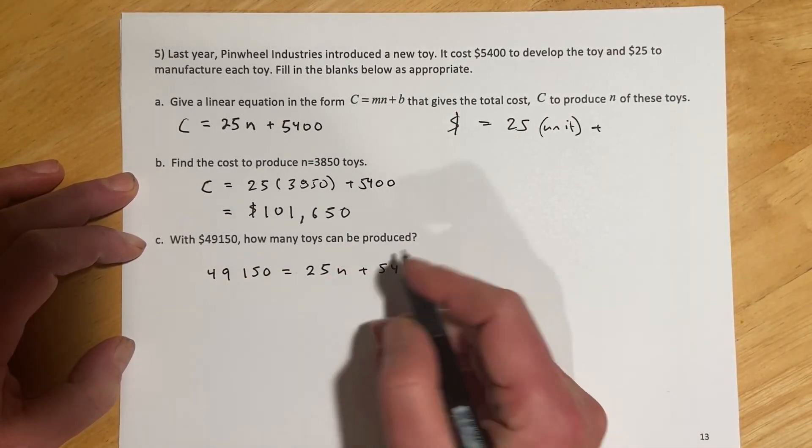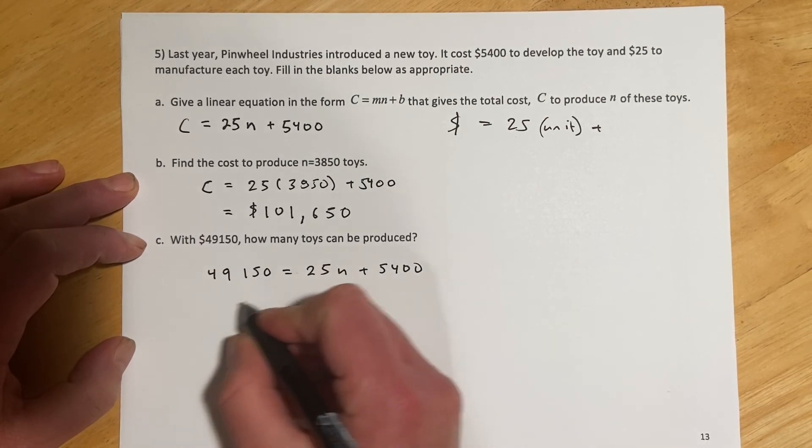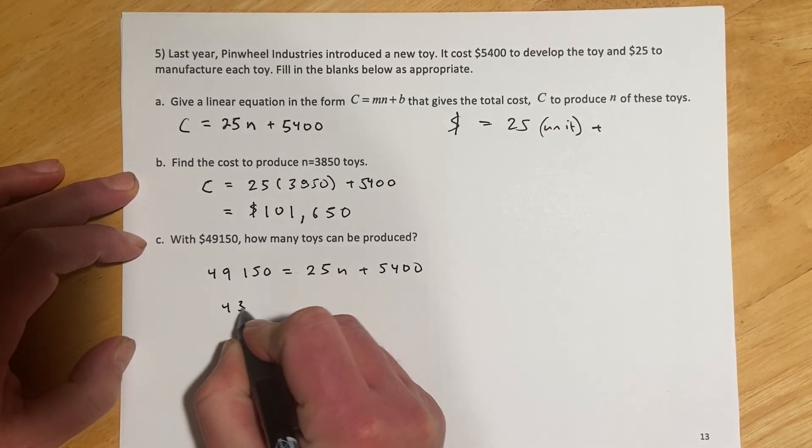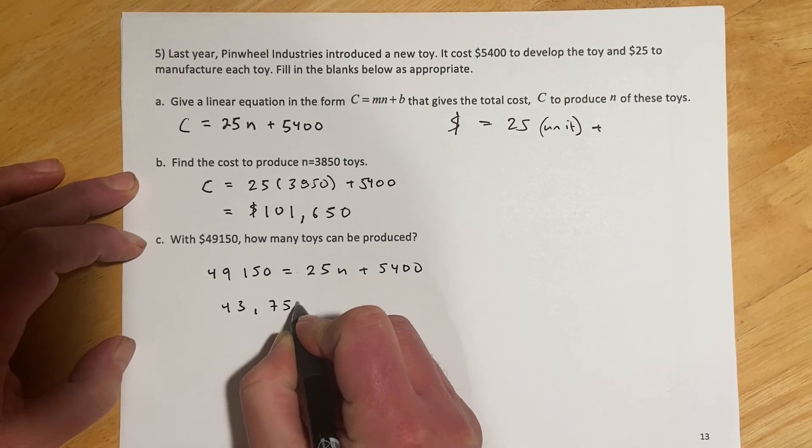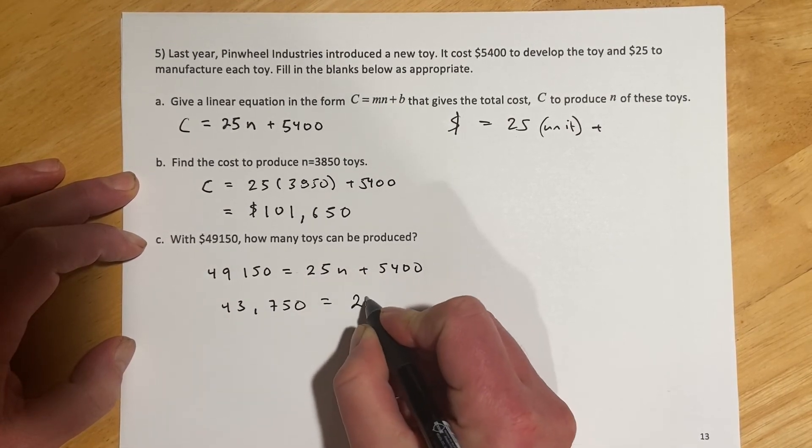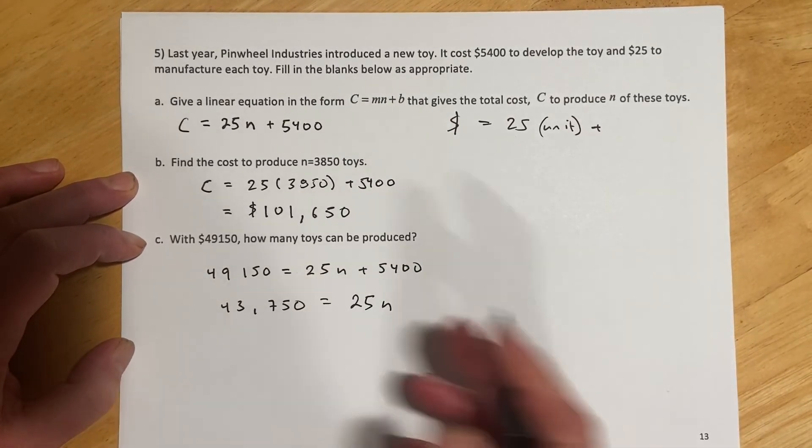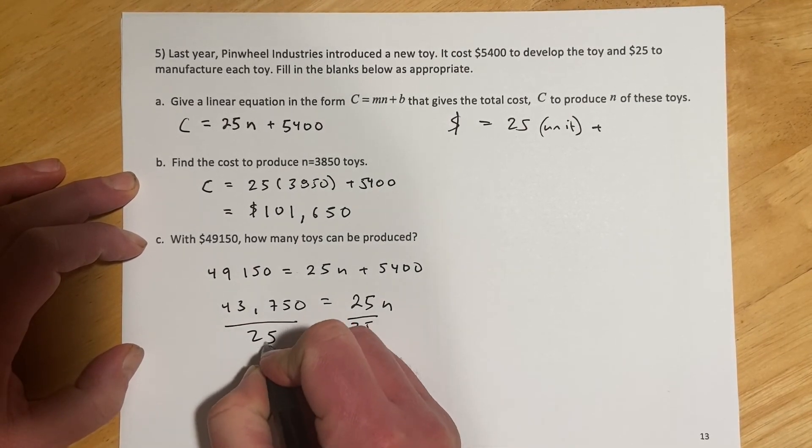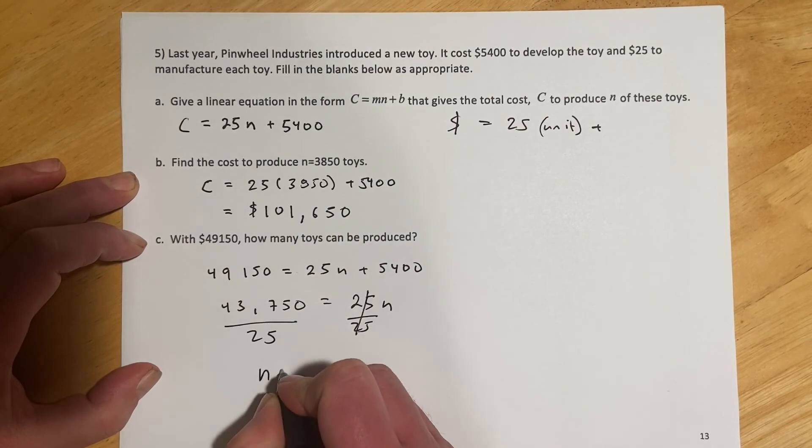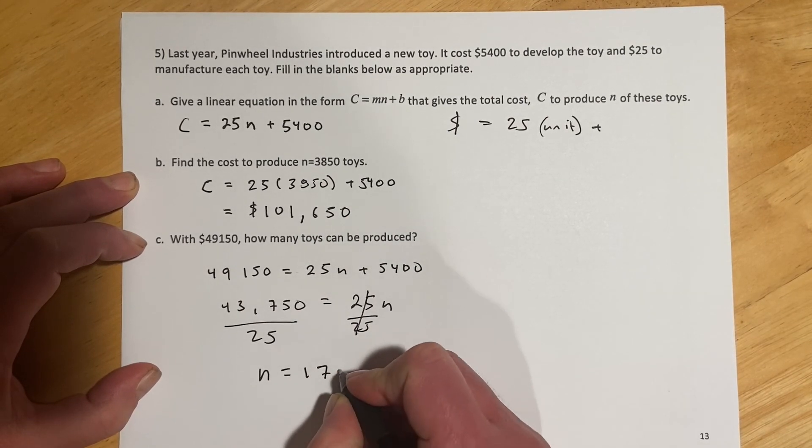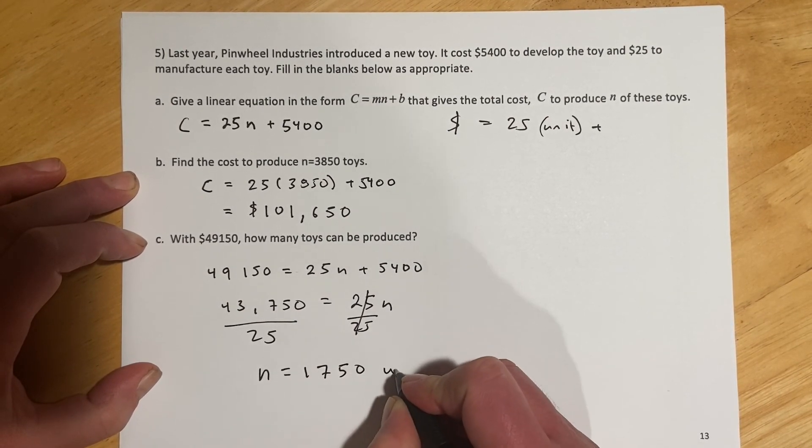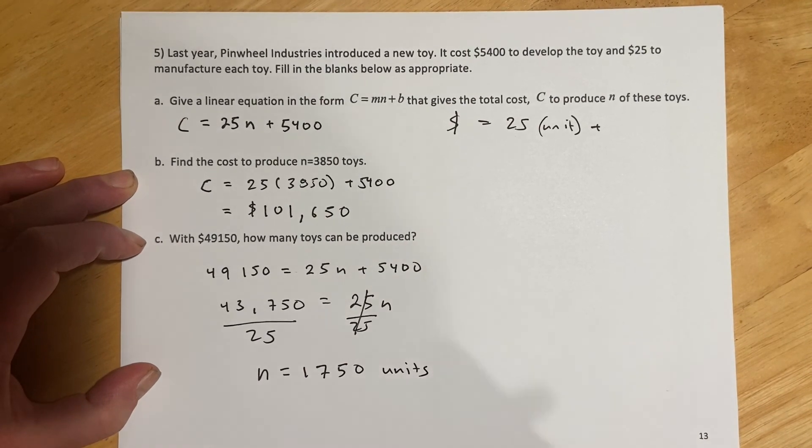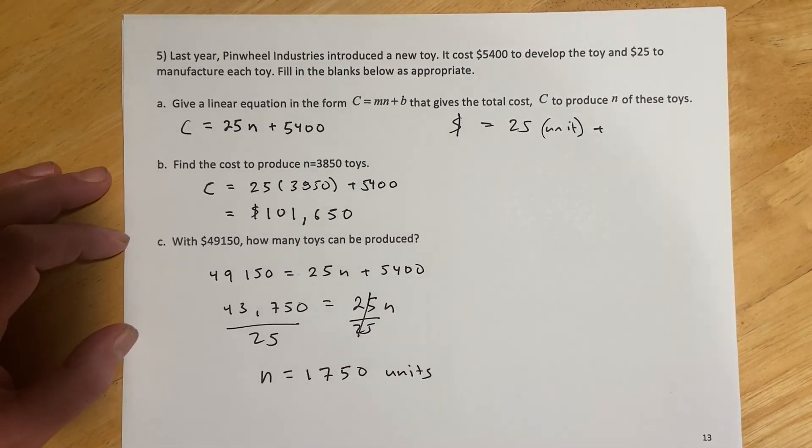And so we'll scoot the $5,400 over, and you do that, and you're going to get $43,750. And then divide both sides by $25. And we'll get N equals 1,750. Again, that's units instead of dollars this time. See you next time.